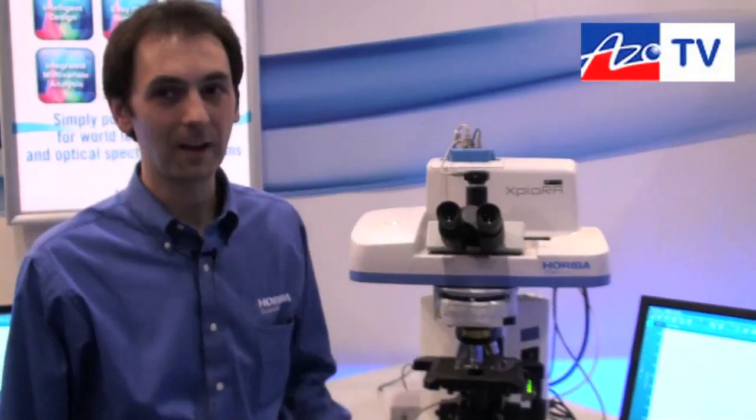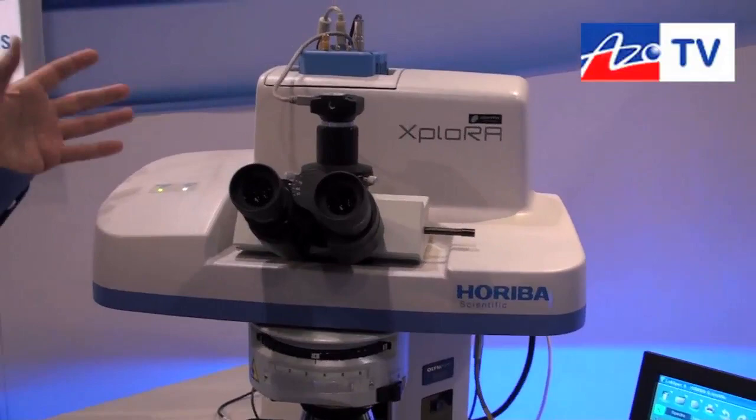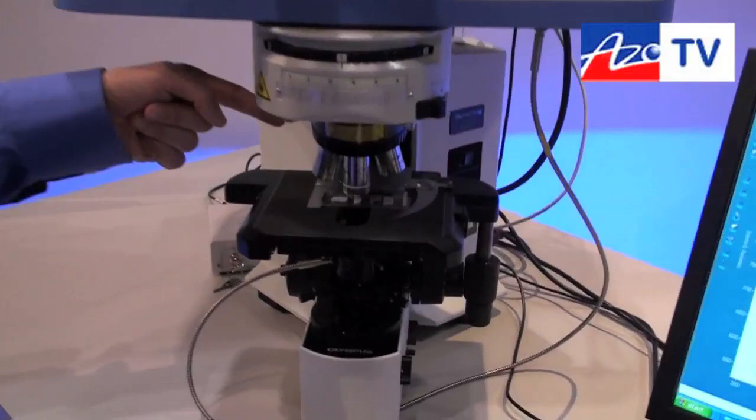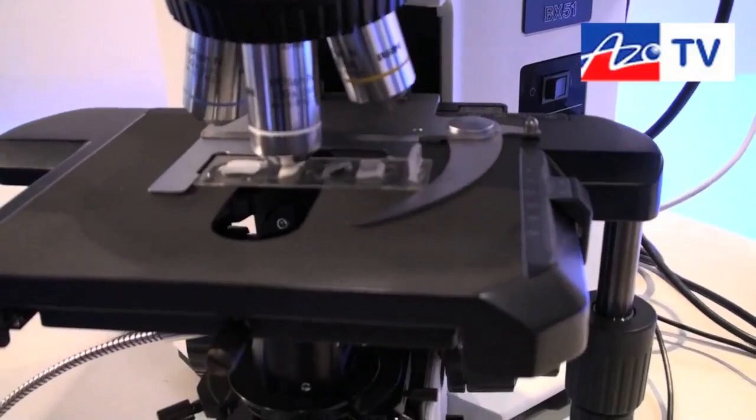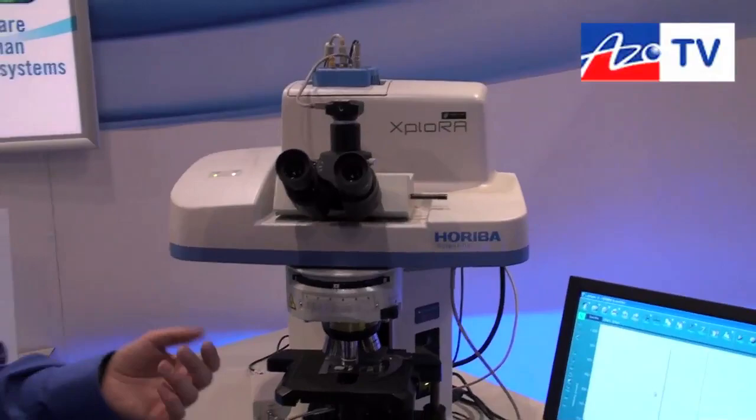This is the Explorer Raman spectrometer. Basically this spectrometer is equipped with a laser that is going to be sent to the sample through the microscope. We focus the laser light on the sample and produce the Raman signal that we're going to analyze in the instrument.